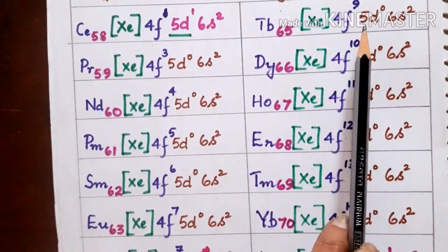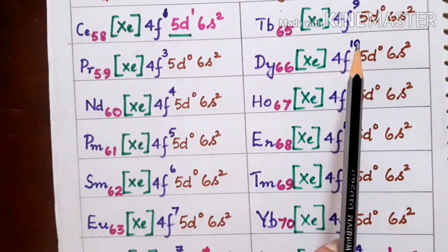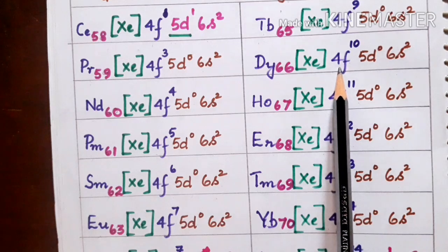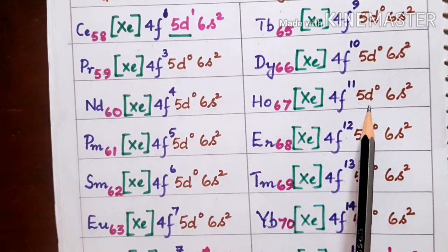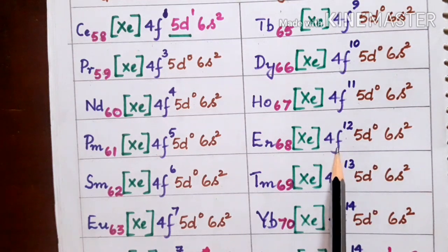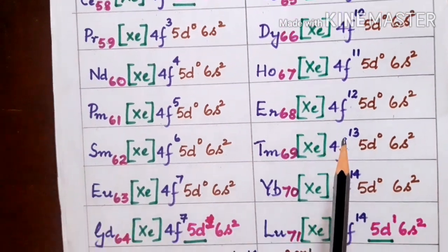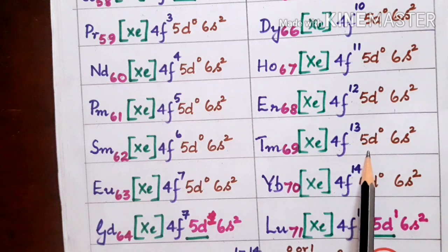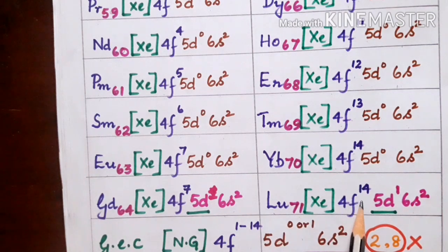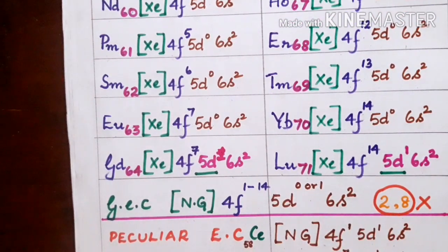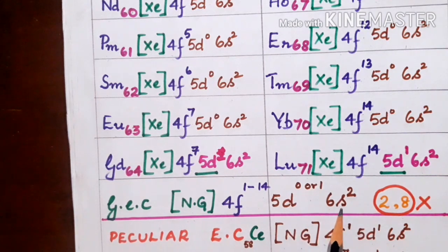Terbium has the configuration 4f⁹ 5d⁰ 6s², dysprosium 4f¹⁰ 5d⁰ 6s², holmium 4f¹¹ 5d⁰ 6s², erbium 4f¹² 5d⁰ 6s², thulium 4f¹³ 5d⁰ 6s², ytterbium 4f¹⁴ 5d⁰ 6s², and the last element lutetium has the configuration 4f¹⁴ 5d¹ 6s². On examining these configurations, we can generalize that lanthanides have the configuration [noble gas] 4f¹⁻¹⁴ 5d⁰ˢ¹ 6s².